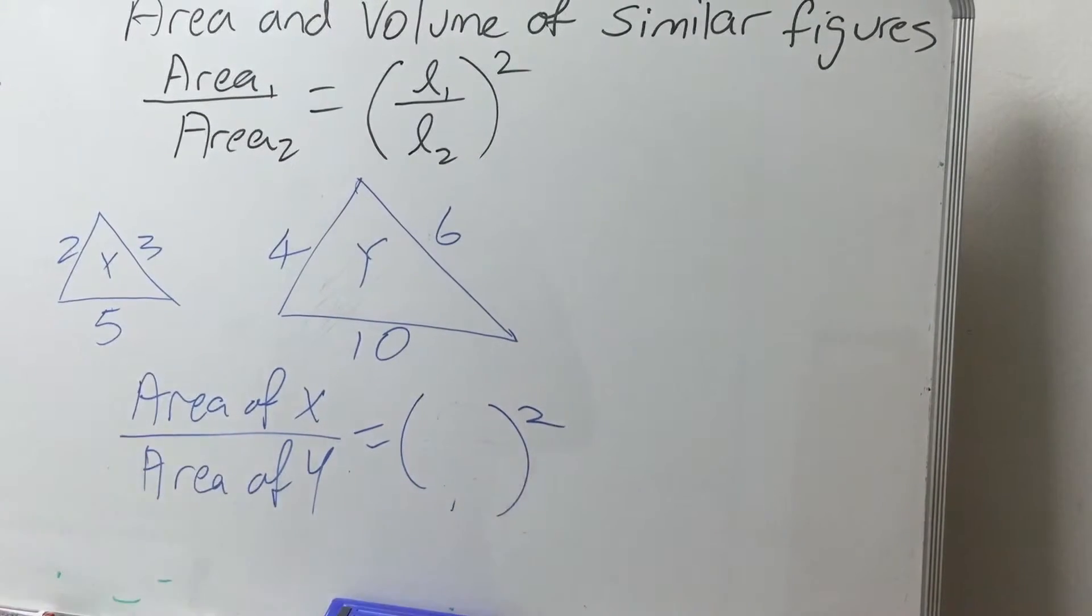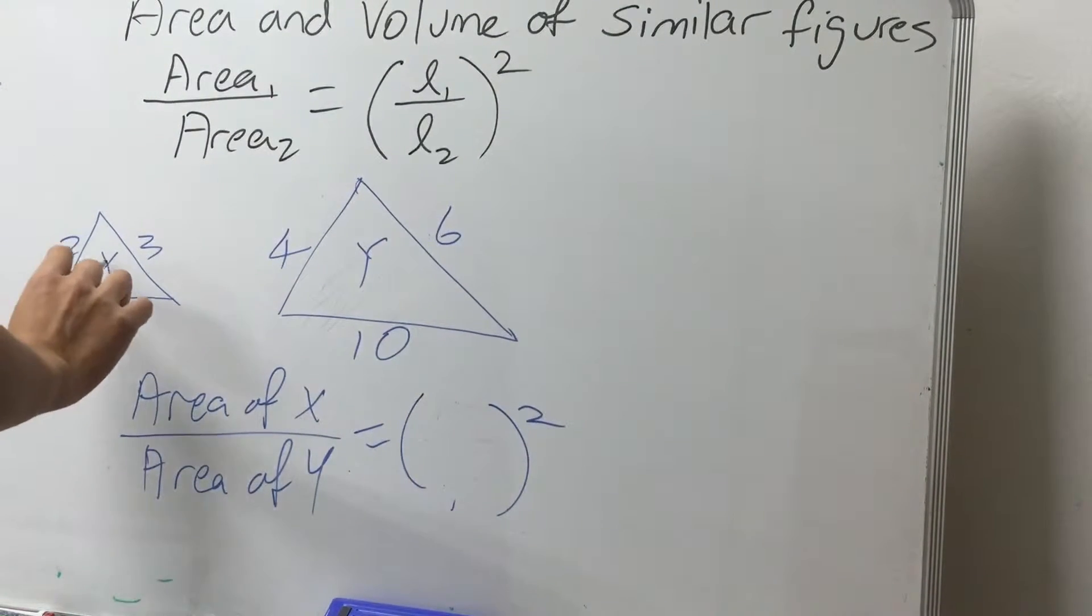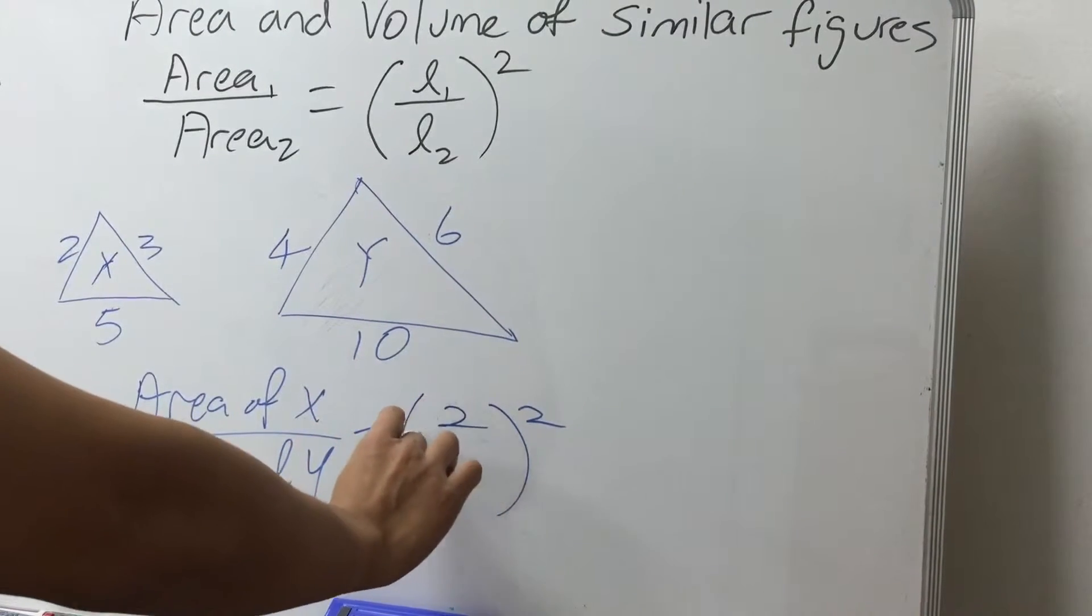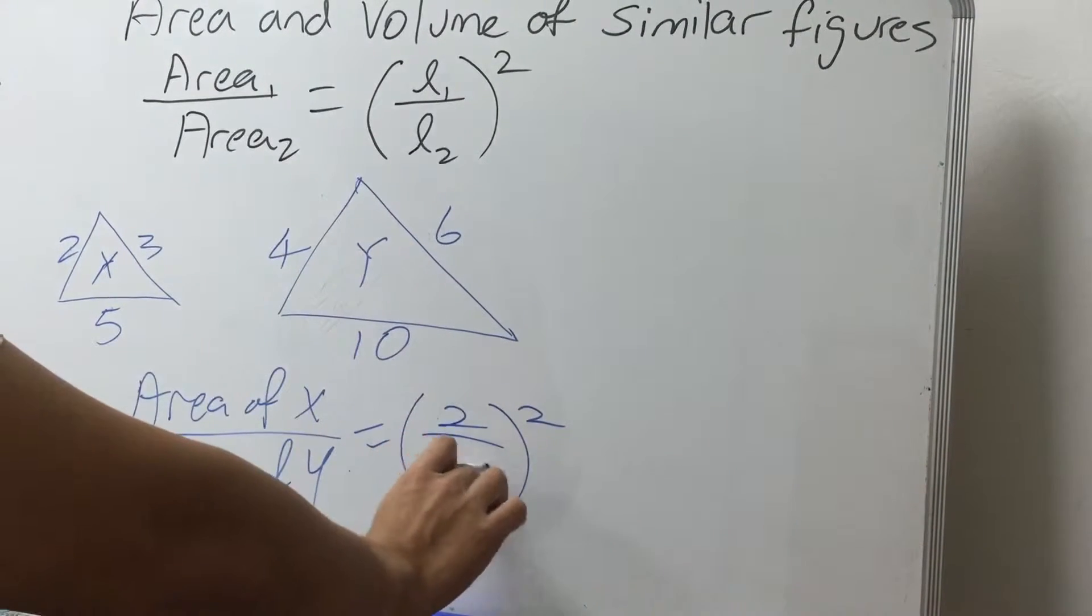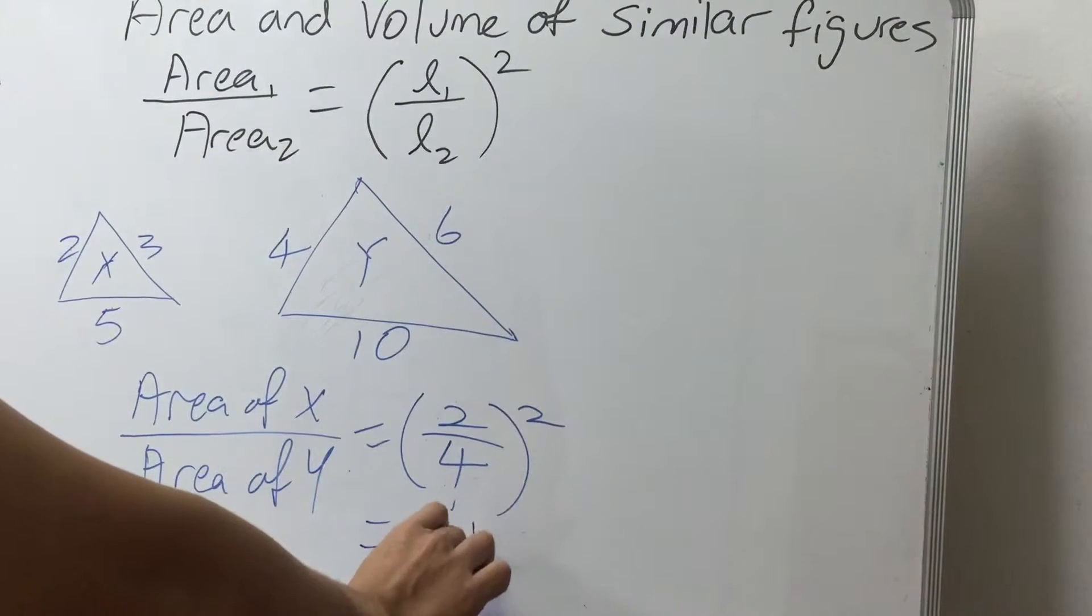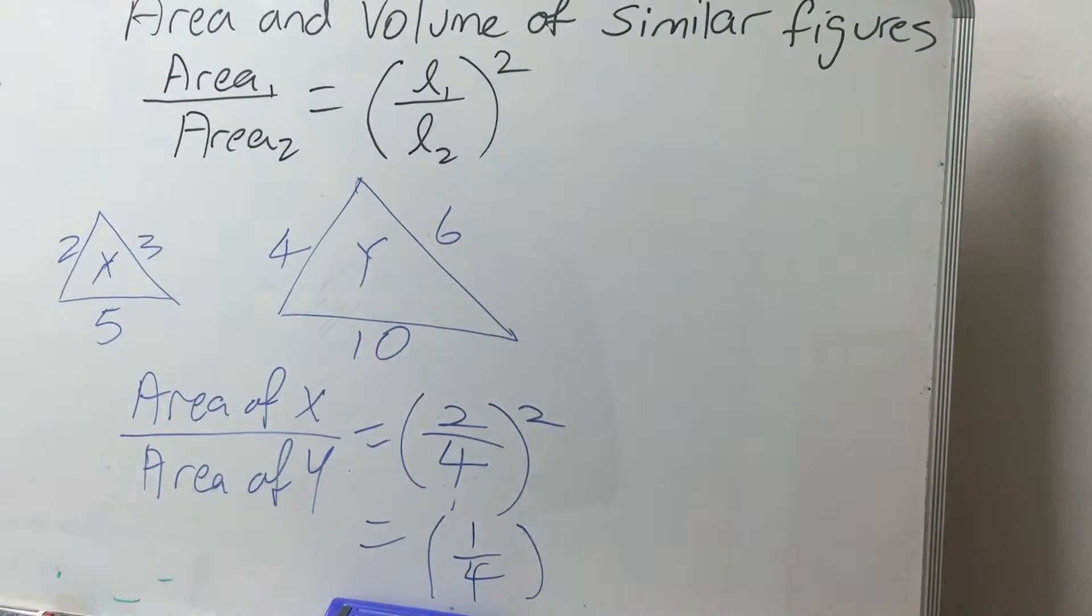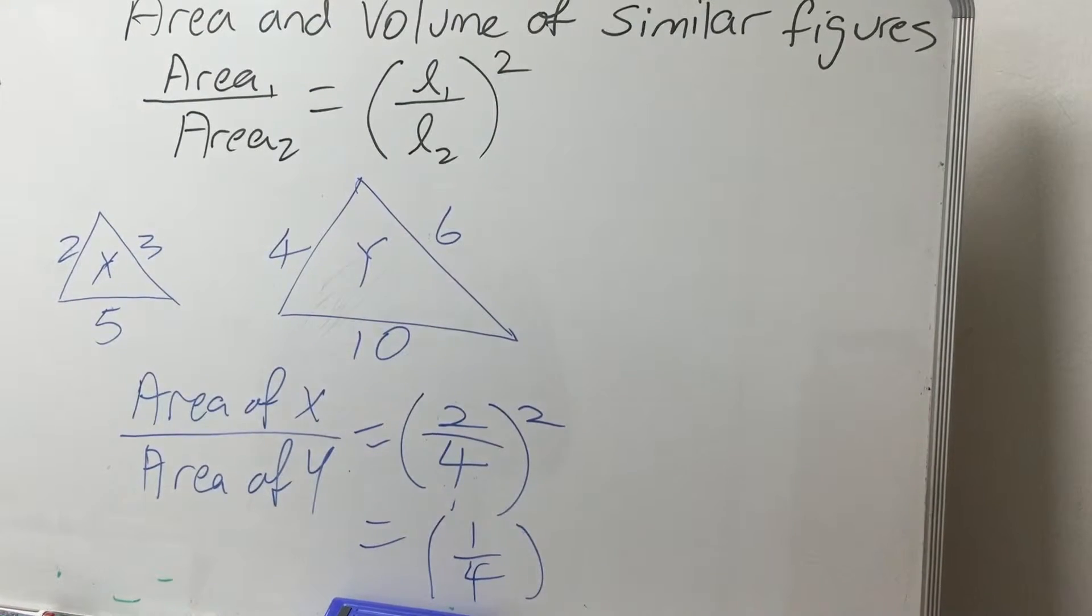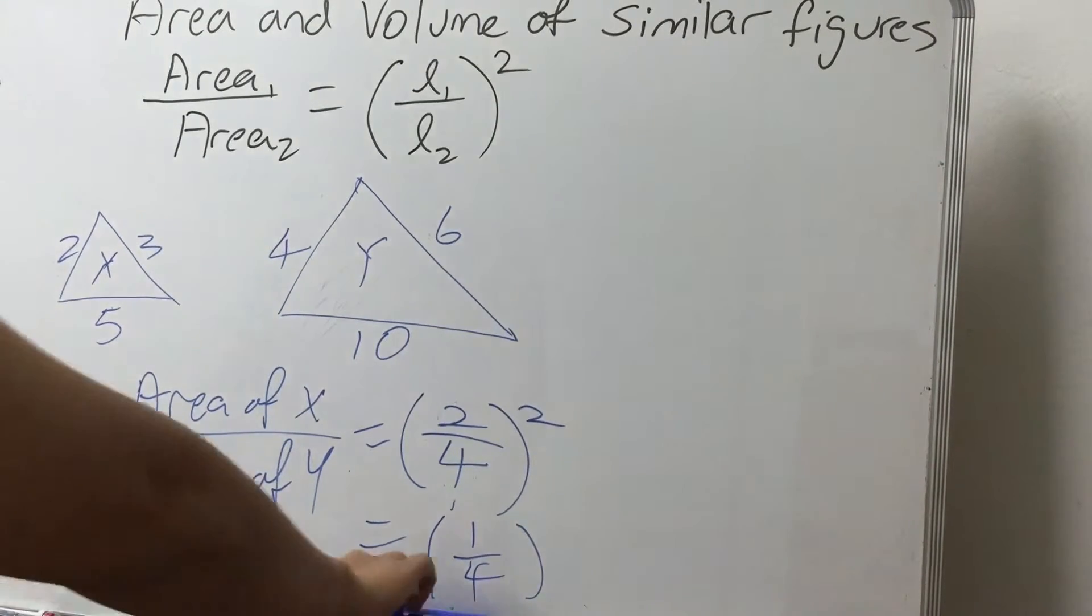So the ratio of the area of X to the area of Y will be given by side of X, which is 2, over side of Y, which is 4. So this will give you 1 quarter. So the ratio of the area of X will be 1 to 4.